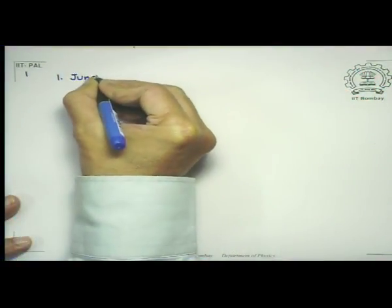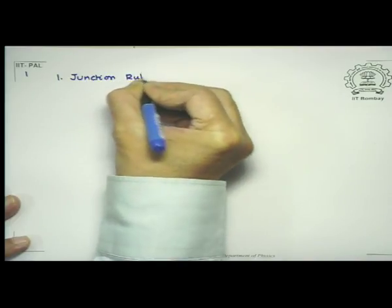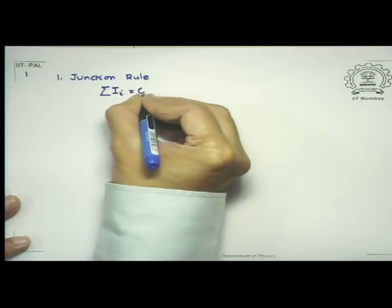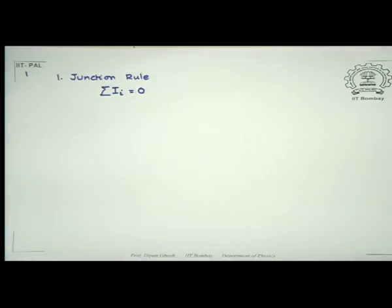We will quickly recall that Kirchhoff's laws consist of two laws. The first is called the junction rule, where at any junction defined by having at least three conductors joining at that point, the algebraic sum of all the currents arriving there must equal zero. By algebraic sum, those arriving are taken as positive and those leaving as negative, or vice versa.